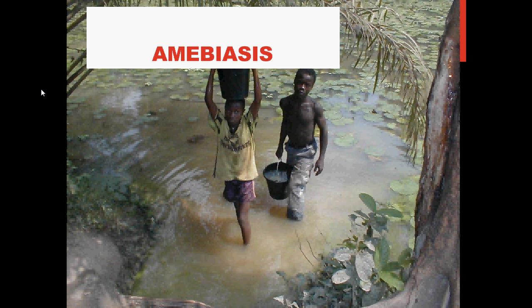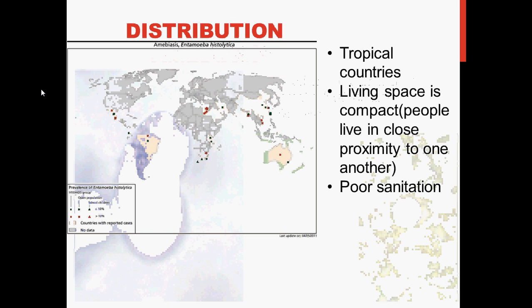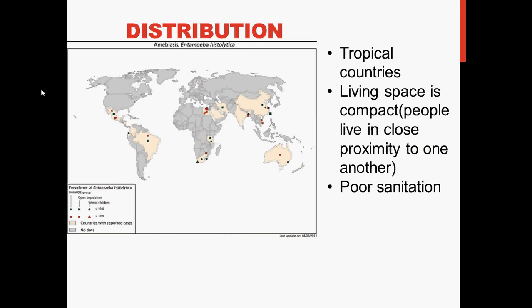Today we are going to look at amoebiasis. Amoebiasis is an infection of the intestines caused by the parasite Entamoeba histolytica. Sometimes amoebiasis is incorrectly used to refer to infection with other amoeba, but strictly speaking it should be reserved for Entamoeba histolytica.